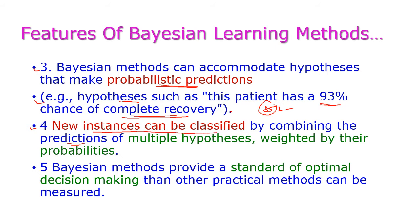The predictions are weighted by their probabilities. The fifth feature is that Bayesian methods provide a standard of optimal decision making, which is an important advantage of using Bayesian methods.